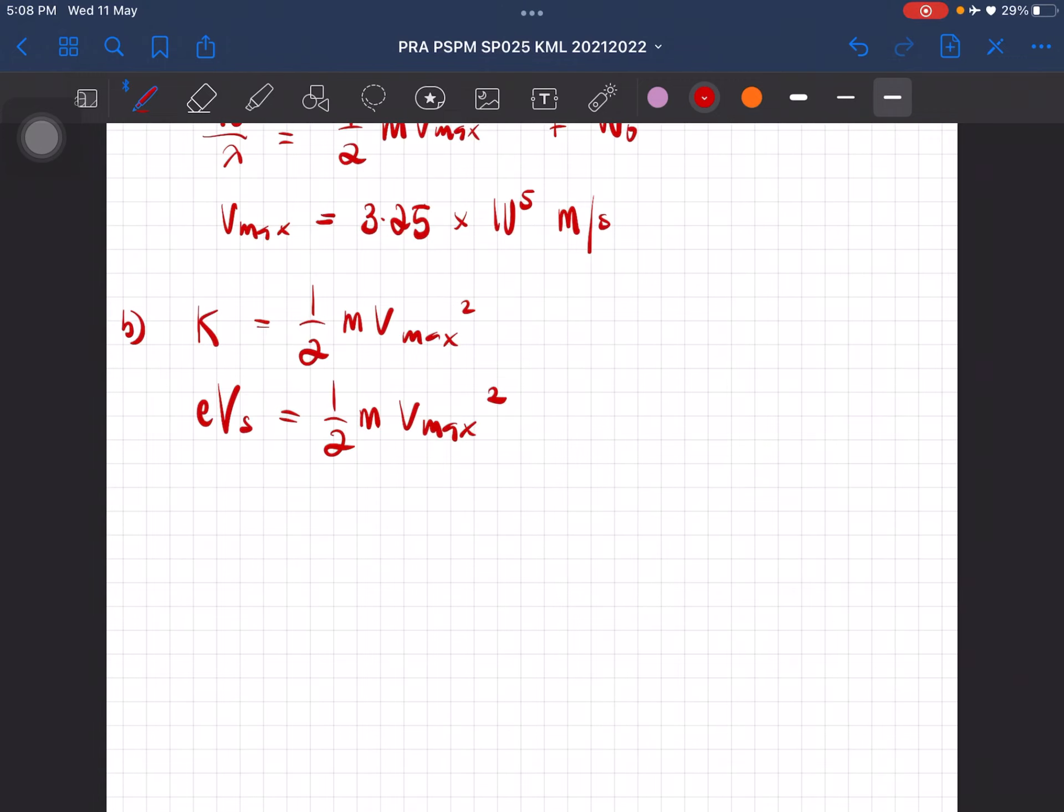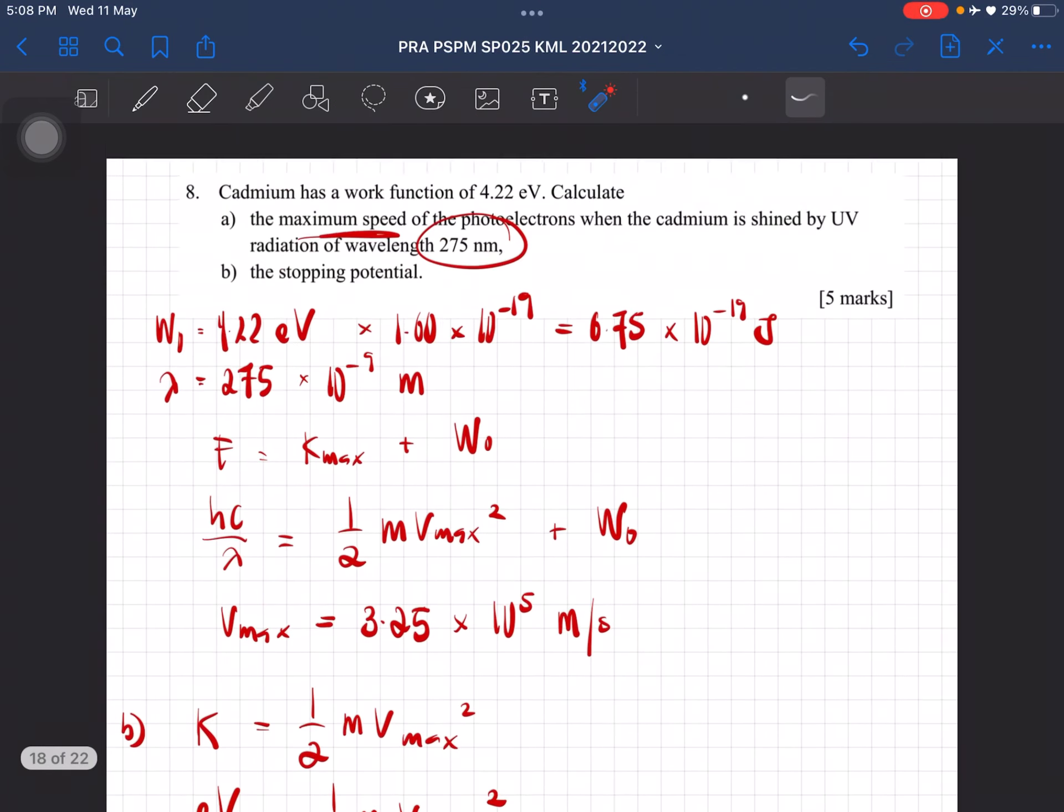Alright, so now, the stopping potential, you will then get 0.30 volt. So, remember e is equal to 1.6 times 10^-19, and then m is given in the question, which is...